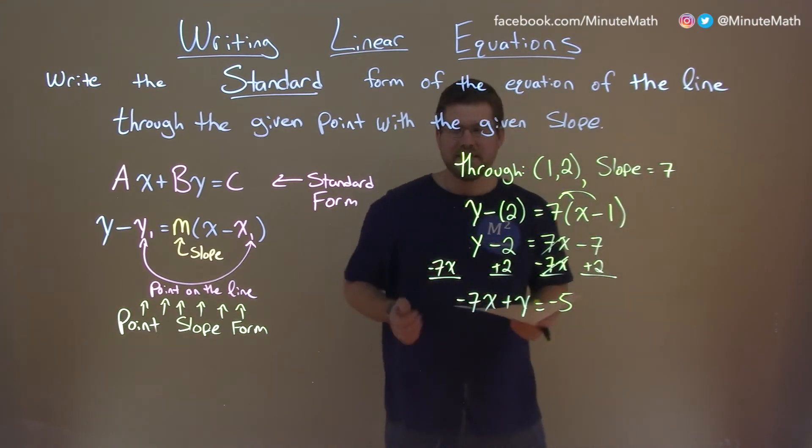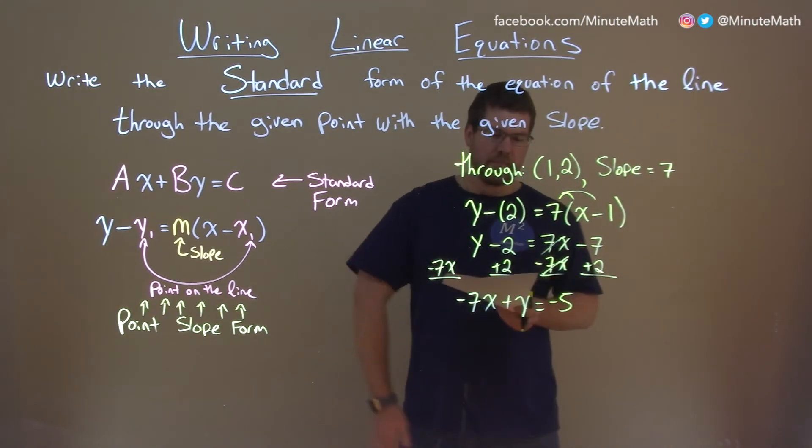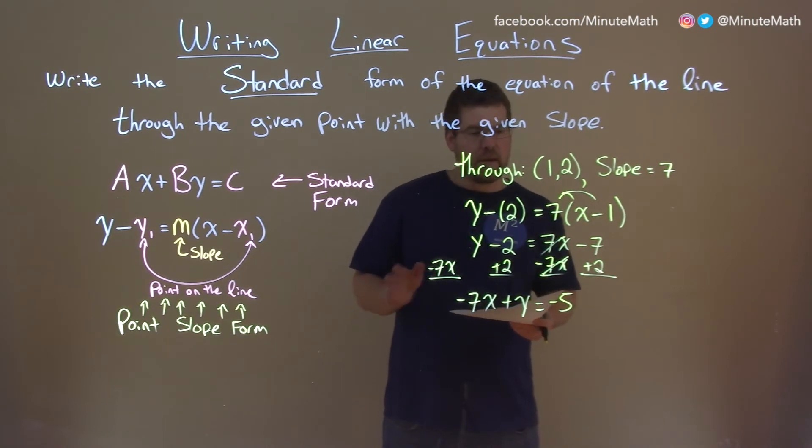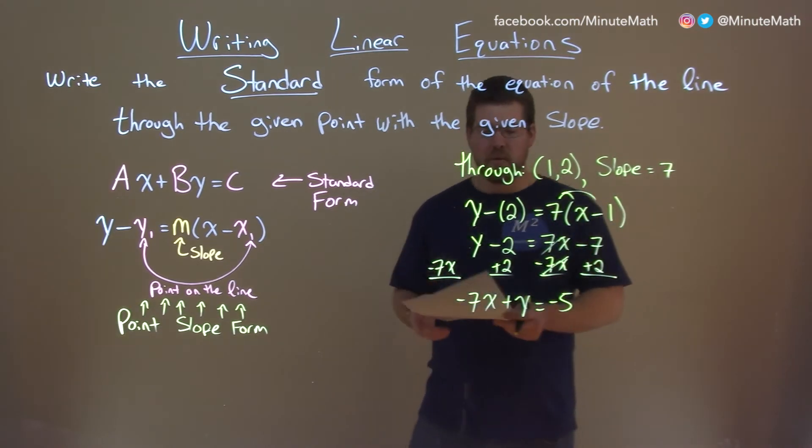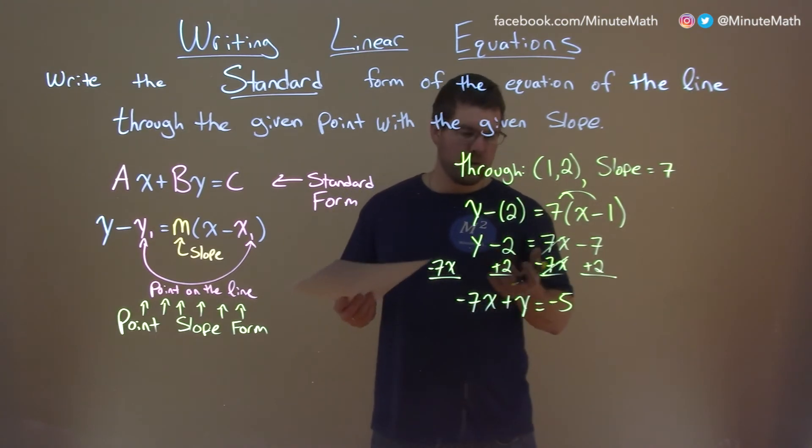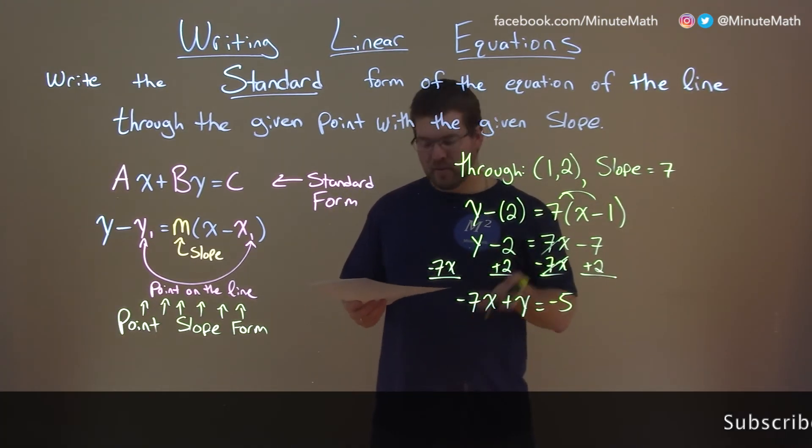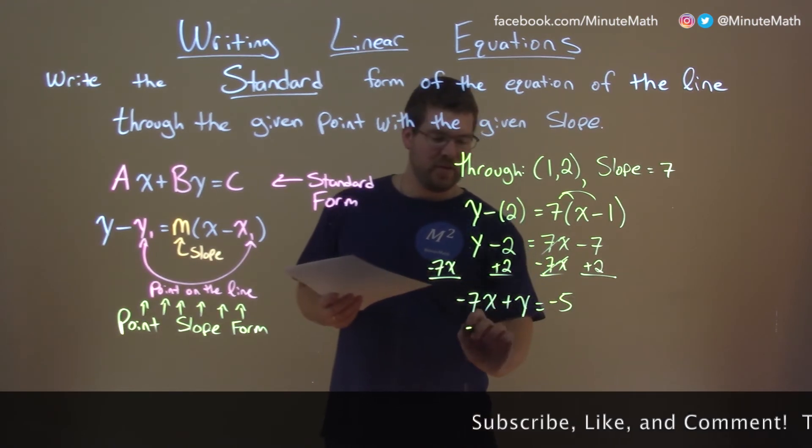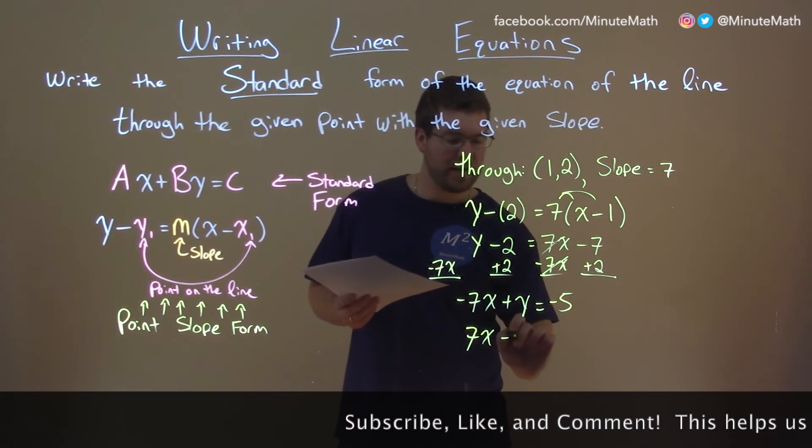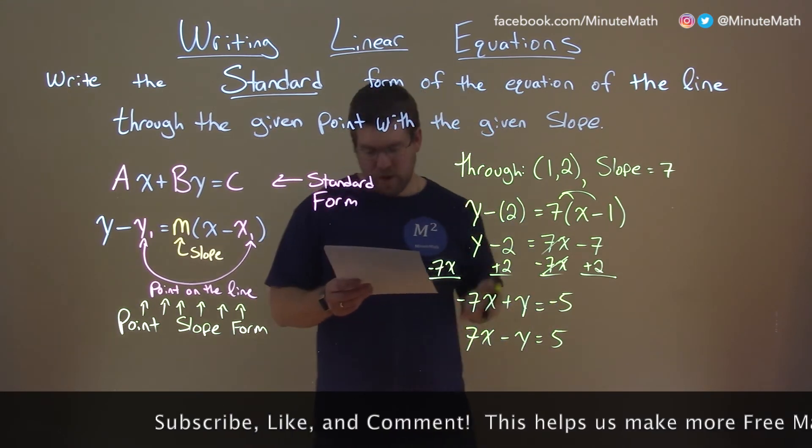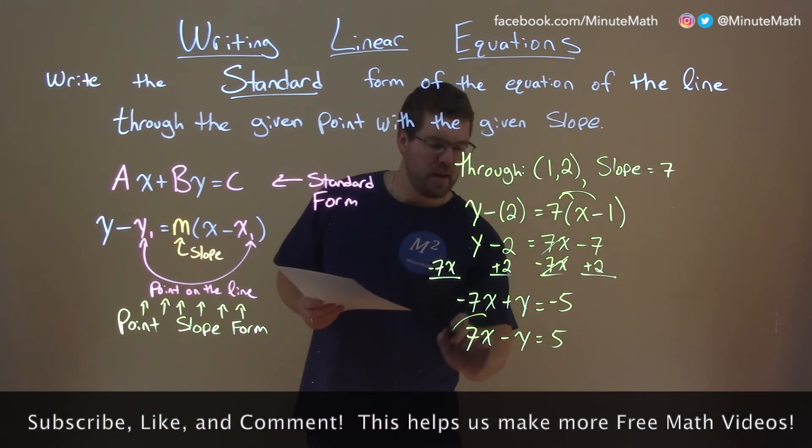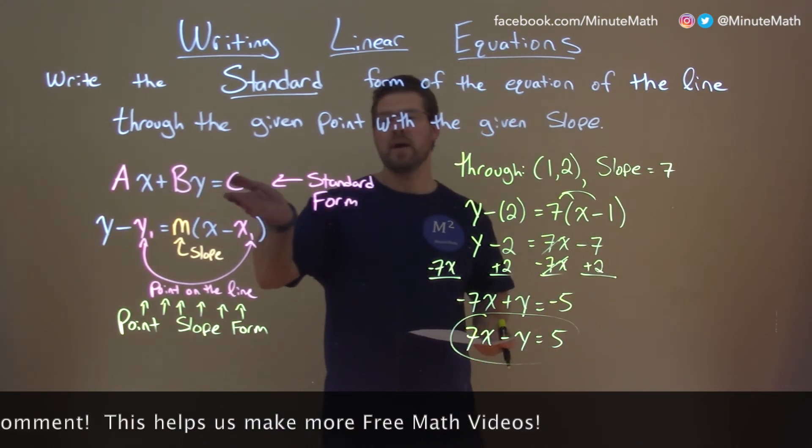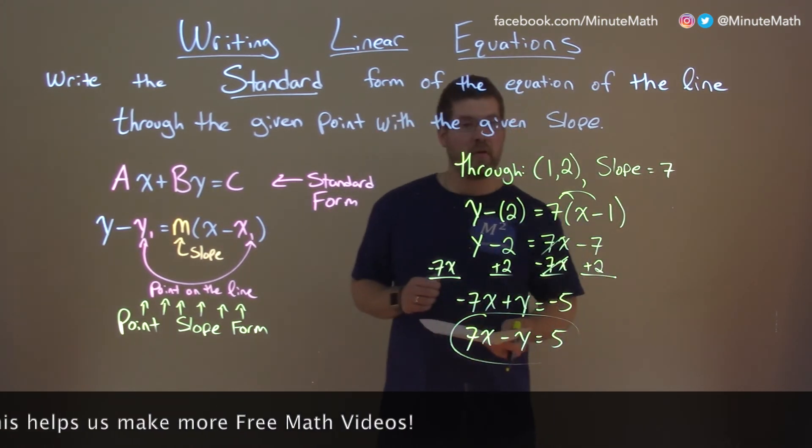And that is a version of our standard form here. Sometimes people want to make this all positive, make the x is positive, or the x value positive. It's up to you. But right now, we are in standard form. If you want, you multiply everything by negative 1, then you get this, 7x minus y equals a positive 5. Either way, you can get that answer. That's up to you. But we're in the form ax plus by equals c. That's our standard form here.